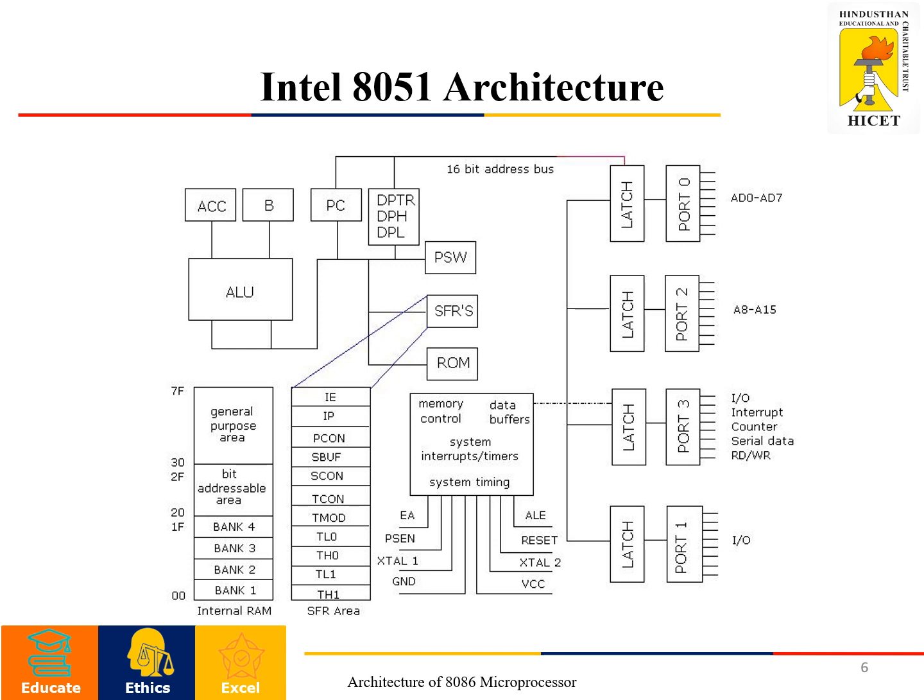About the architecture of the 8051: the main block is the ALU, which performs arithmetic and logical operations. Along with the ALU, the accumulator and B register are available. The accumulator is used as the A register and holds the operands. The B register is exclusively meant for multiplication and division operations. A program counter and DPTR block are also available — DPTR can be divided into DPH and DPL for higher and lower order bits. A program status word is available to provide the flag content.